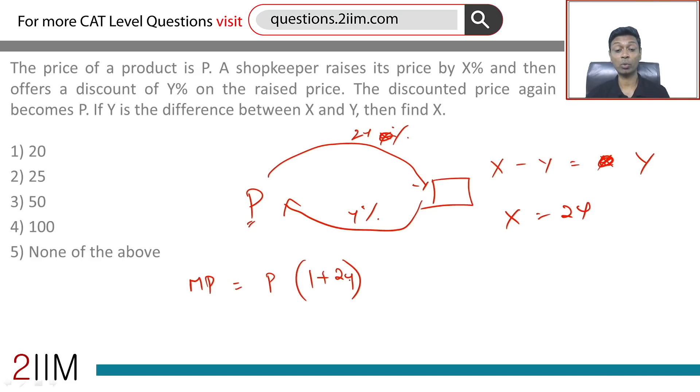When I'm writing it as 2Y, I'm not saying 1 plus 2 into 25, 1 plus 2 into 25 by 100. I'm thinking of it in percentage terms.